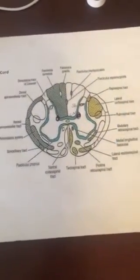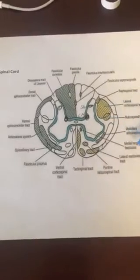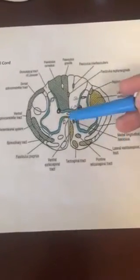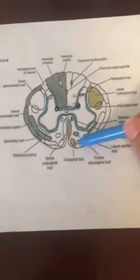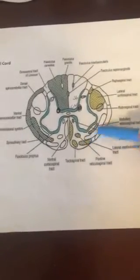So here it's labeled as medial longitudinal fasciculus, but it becomes the medial vestibulospinal tract. So those are synonymous with each other. The lateral vestibulospinal tract is located more anterior and laterally here, right next to our anterior lateral system.